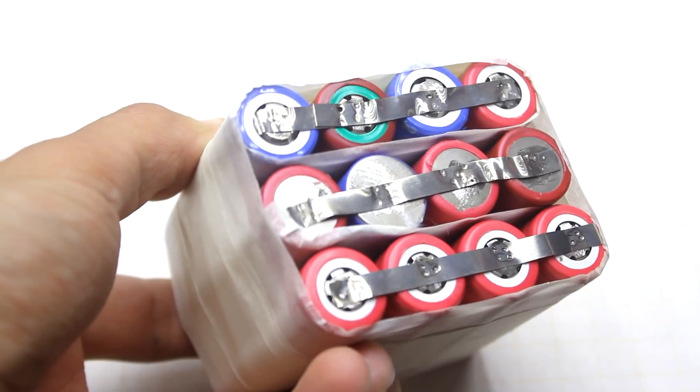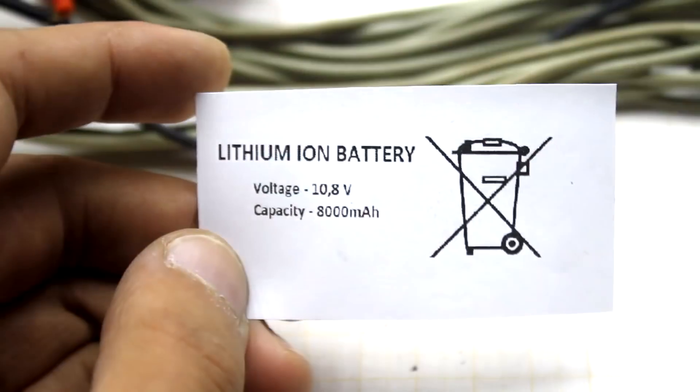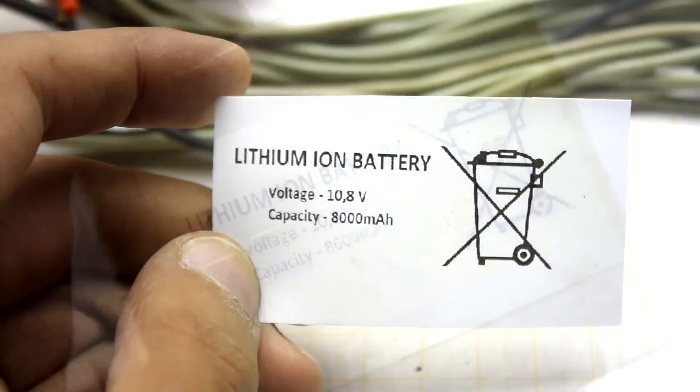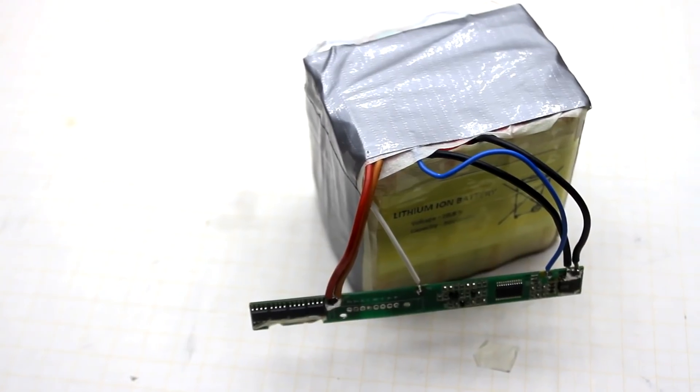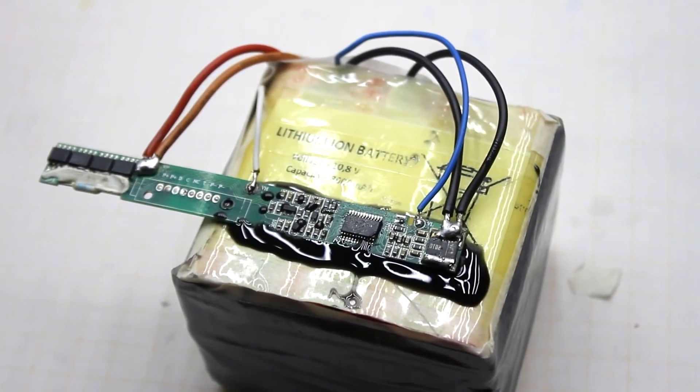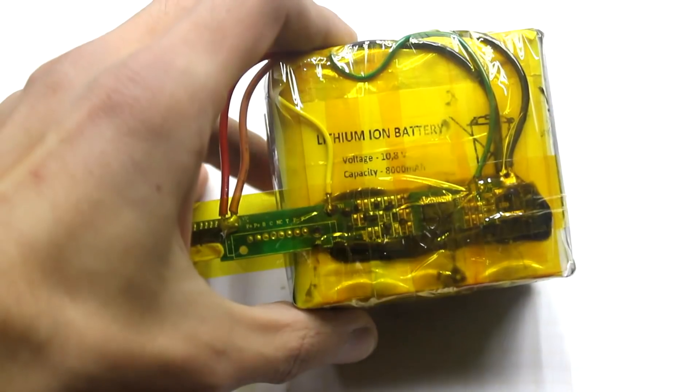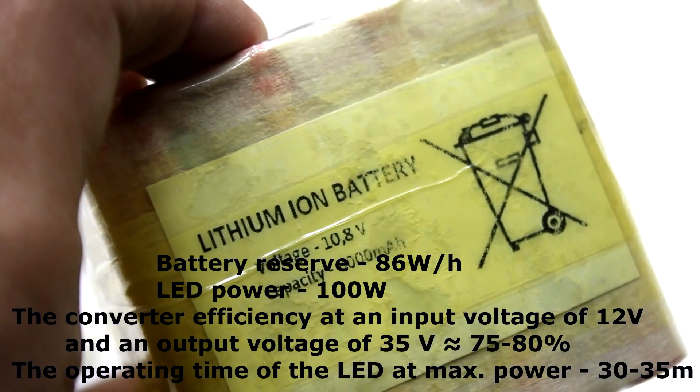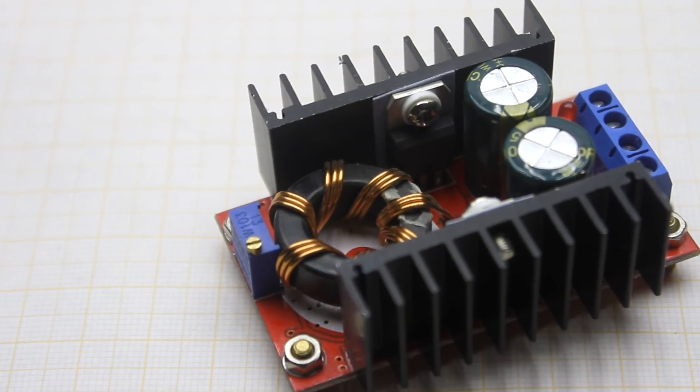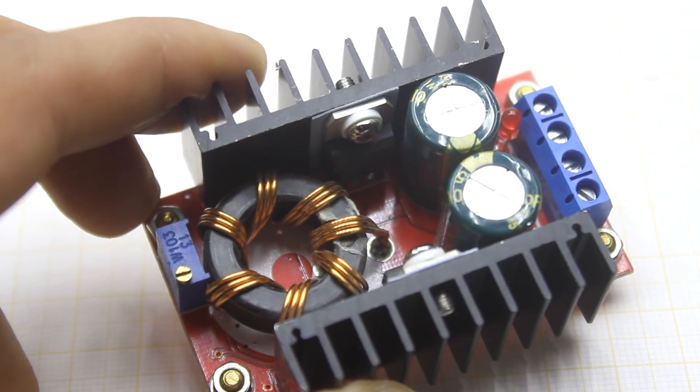The finished battery was wrapped up in everything that is at hand. Knowing the capacitance and voltage of the battery, we can calculate the operating time of the flashlight, and we must take into account the efficiency of the converter, but we will talk about this a little later.